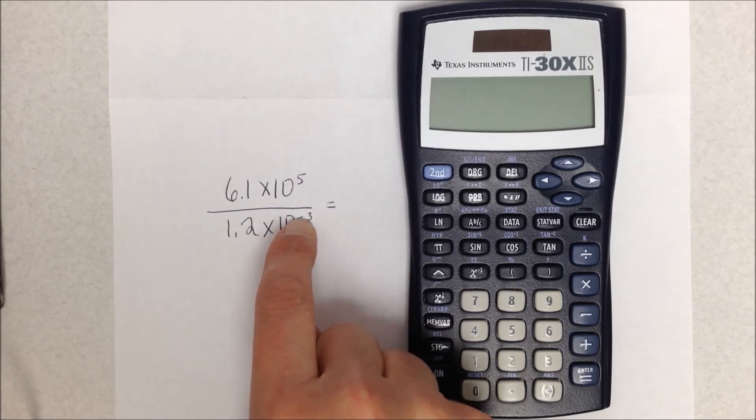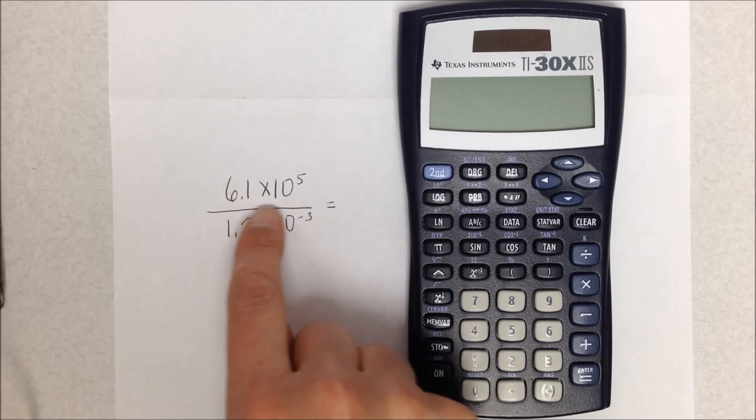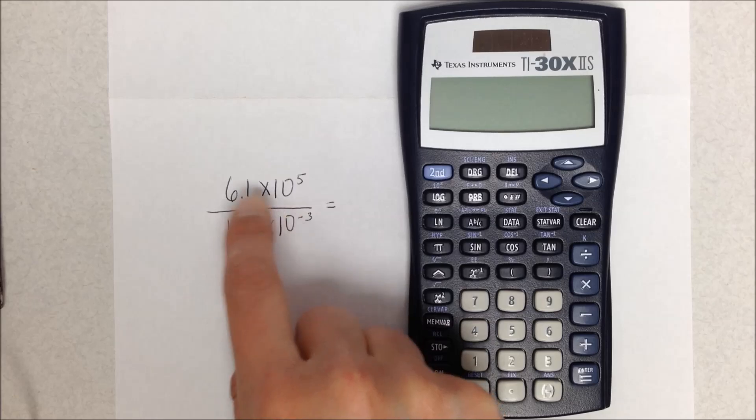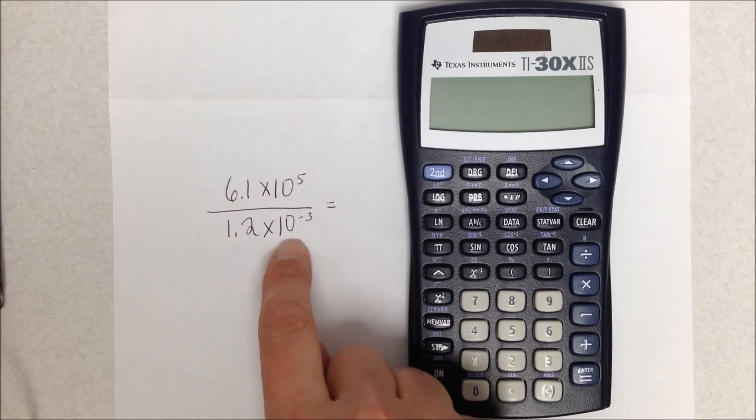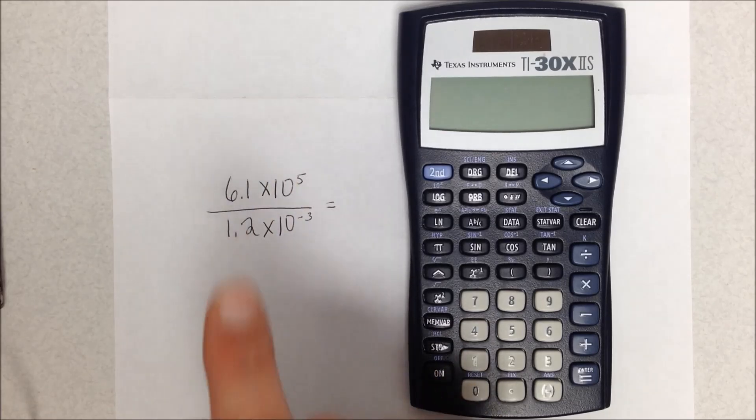So I've got two issues I have to worry about. One, how do I enter this number, the 6.1 times 10 to the fifth, in scientific notation in my calculator? And how do I enter the denominator correctly so that the right calculation is done?